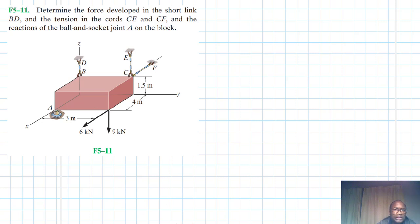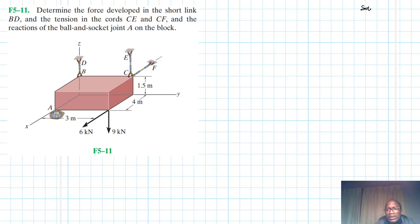Welcome to this screencast. The problem reads: determine the force developed in the short link BD and the tension in the chords CE and CF, and the reactions of the ball and socket joint A on the block. This problem is from Engineering Mechanics and Statics, 13th edition by R.C. Hibbeler.